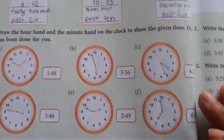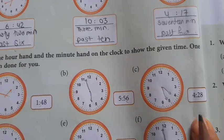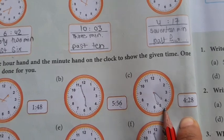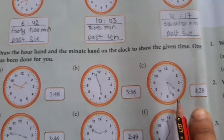5, 56 minutes. Next is 4, 28. So small, 4, 28. A little bit further, then 28. So 4, 28 minutes.